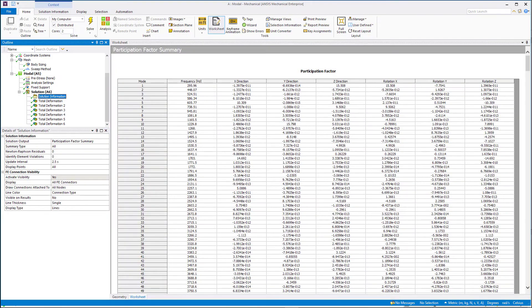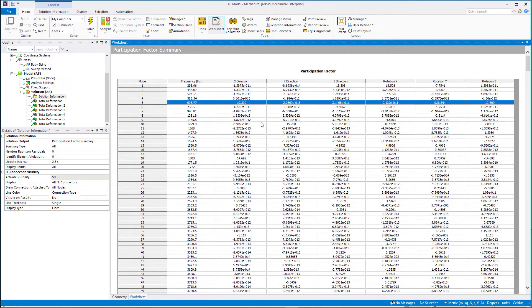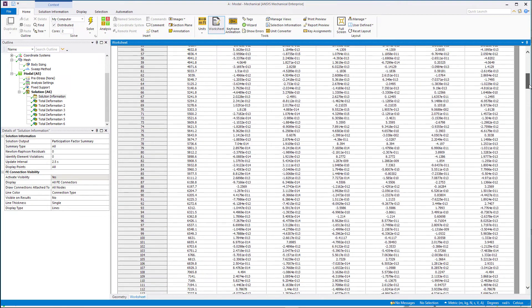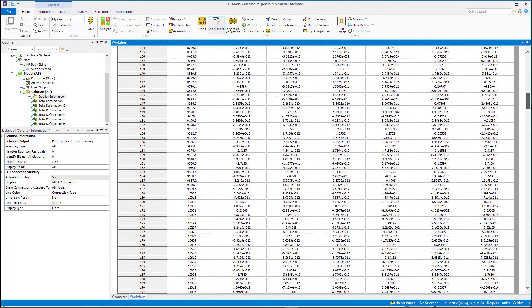Next, see the participation factor and effective mass in the participation factor summary. More prominent modes can be identified by the higher value of the effective mass.